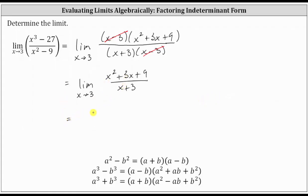Substituting three for x, we have the square of three plus three times three plus nine, all over three plus three. Simplifying, in the numerator, we have nine plus nine plus nine, which is 27, in the denominator, we have six.